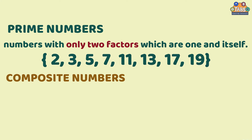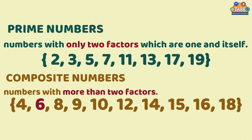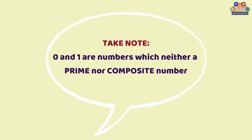Composite numbers are numbers with more than two factors, such as 4, 6, 8, 9, 10, 12, 14, 15, 16, and 18. Take note that 0 and 1 are numbers which are neither prime nor composite numbers.